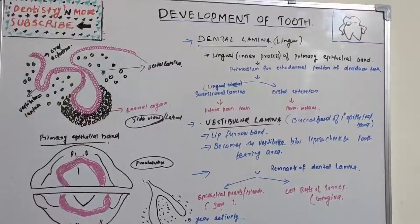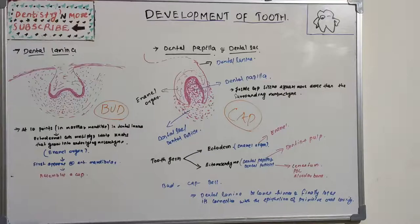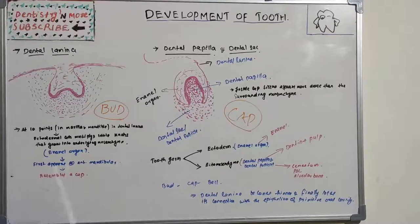This is tooth formation stages. The dental lamina is part of the primary epithelial band. In the epithelial band at 10 points, this dental lamina at 10 different points represents the future deciduous tooth bud.